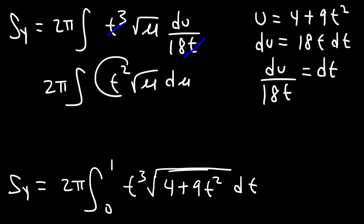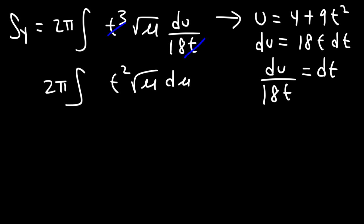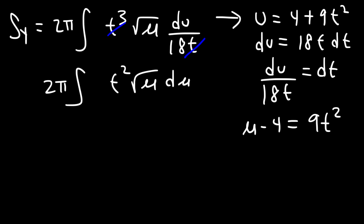Now we need to solve for t². From u equals 4 plus 9t², let's subtract both sides by 4: u minus 4 equals 9t². Multiplying both sides by 1/9, we get t² equals (1/9)(u minus 4).